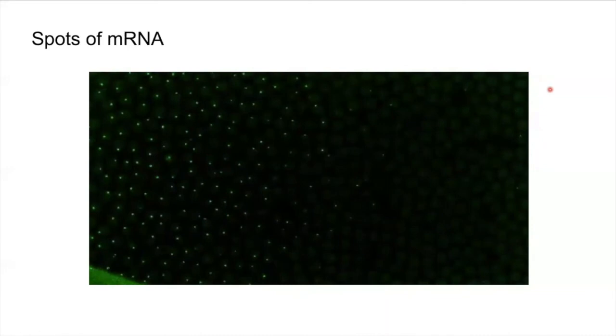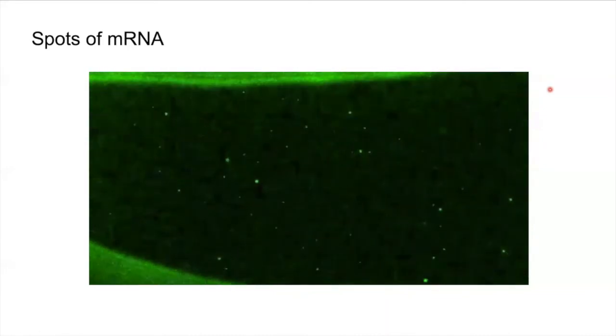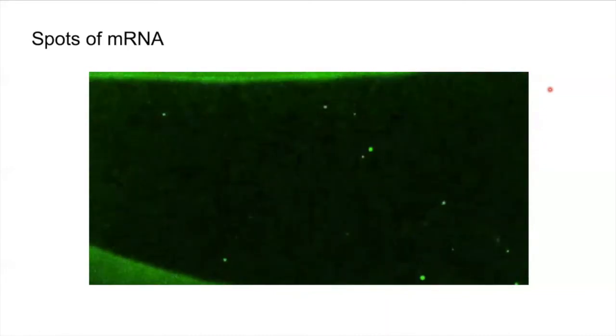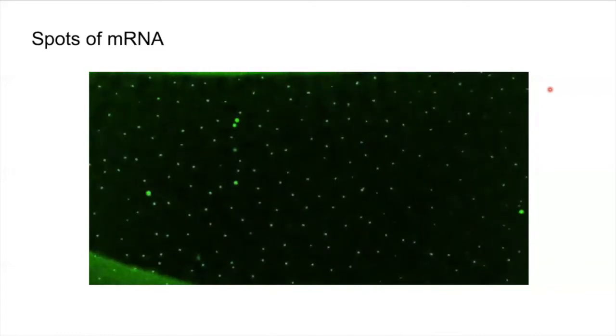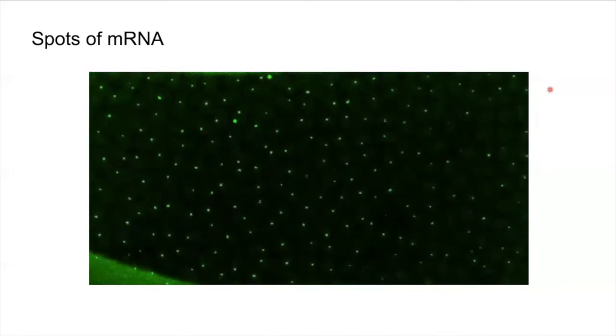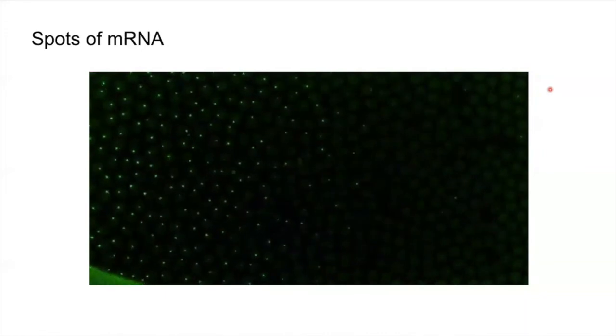This is another fluorescence movie created by the confocal microscope. The green spots that you see are spots where the information in DNA is being read. The spots show the location where molecules known as messenger RNA or mRNA are being produced.